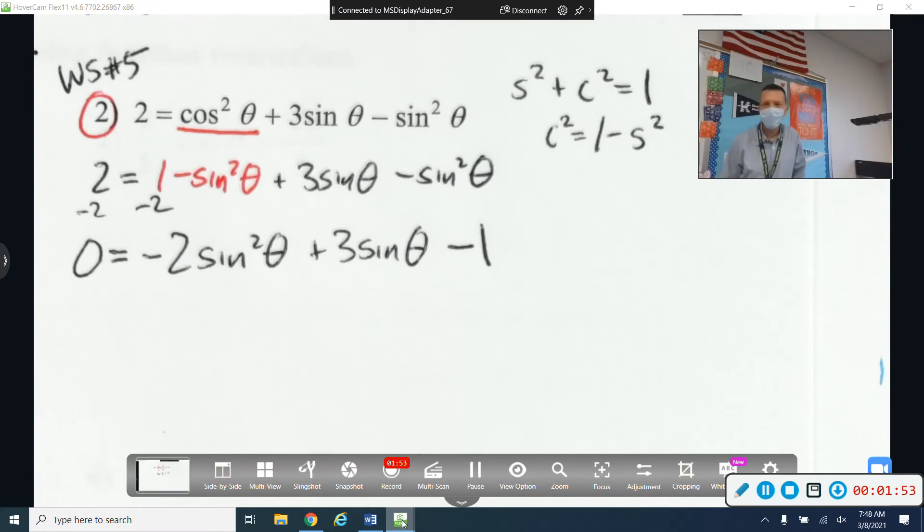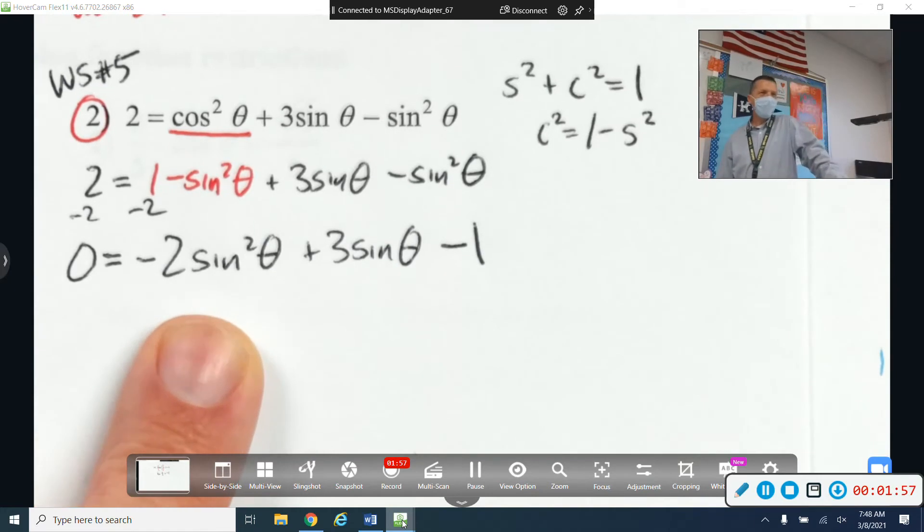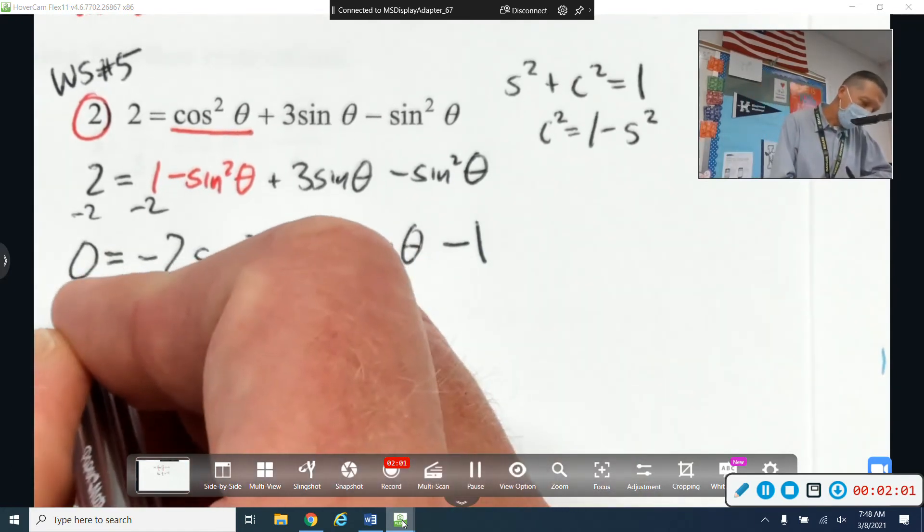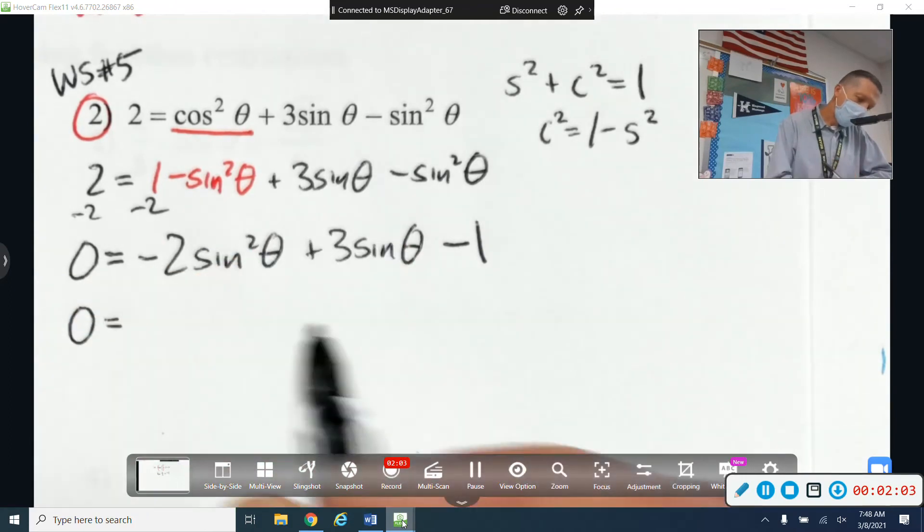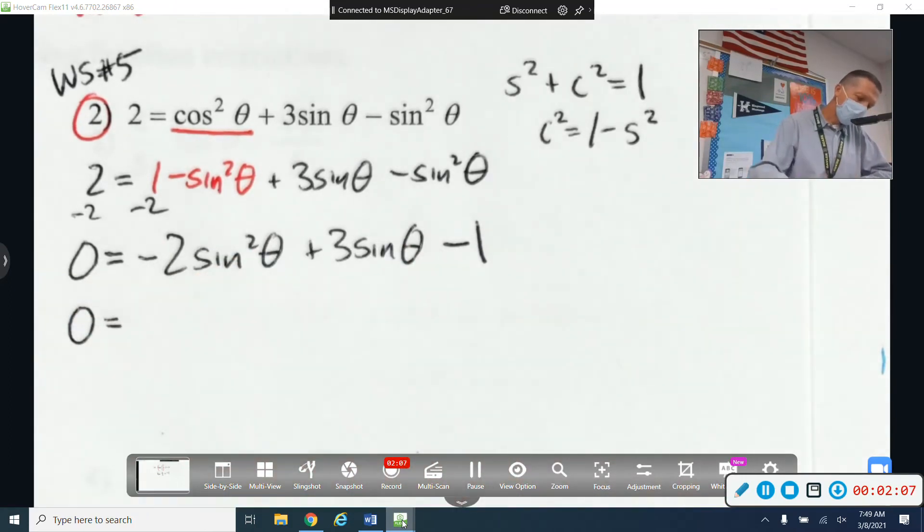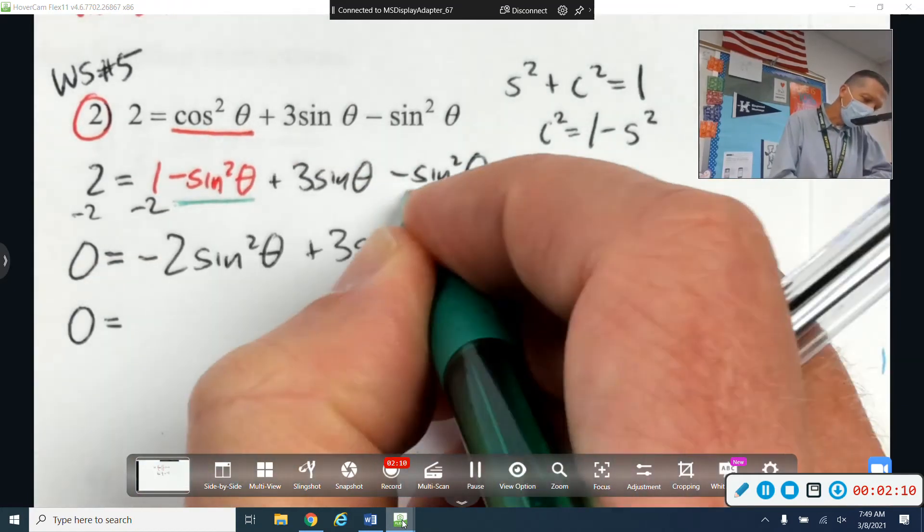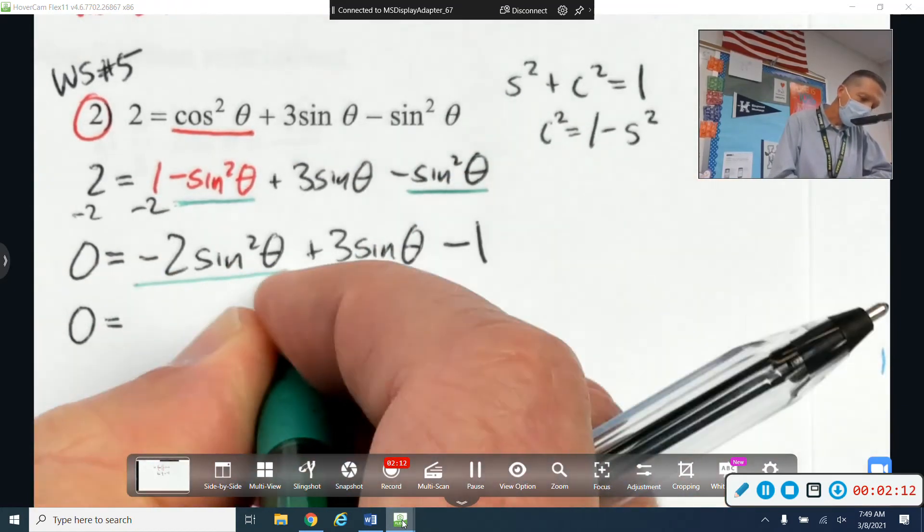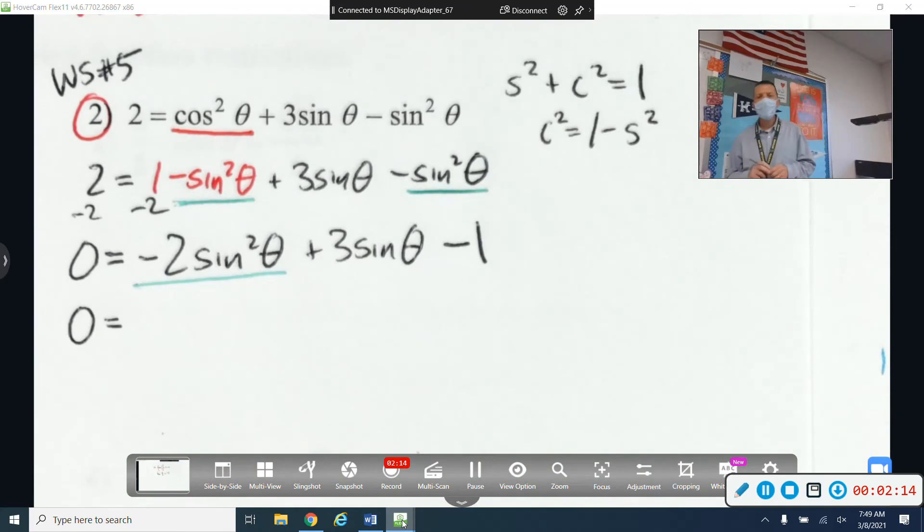Yeah, let's multiply everybody by negative one. That way, I mean, you can factor with a negative there. You just got to be super careful with all the pluses and minuses. Because there's a minus sine squared here and another minus sine squared there. So that made negative 2 sine squared. So let's multiply everybody by negative one.